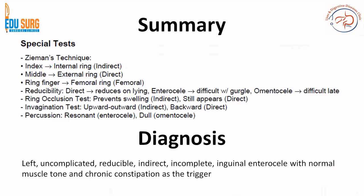This is very commonly asked in exams: what is your diagnosis? There are around seven important points to mention: side, complicated or uncomplicated, reducible or irreducible, indirect or direct or femoral. For example, in this case: left-sided, uncomplicated, reducible, indirect, incomplete inguinal enterocele — with intestine as content, normal muscle tone, and chronic constipation as the trigger. This gives you and your examiner a complete explanation of the case in seven to eight key words.